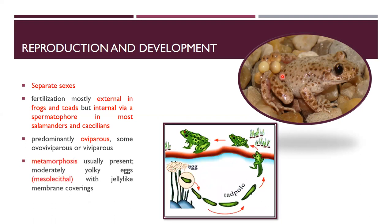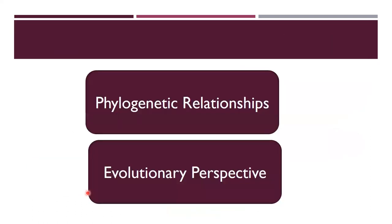Metamorphosis means shape change from larva to adult. Eggs are fertilized, and the larva called the tadpole develops inside. The tadpole then converts to the adult frog, which lives in a terrestrial environment. The eggs of amphibians are mesolecithal with jelly-like membrane coverings.